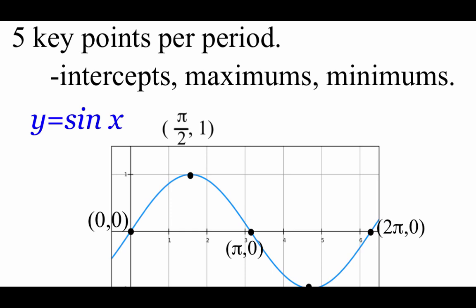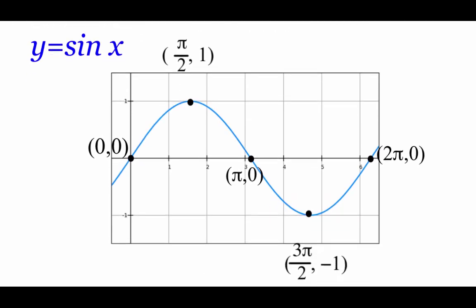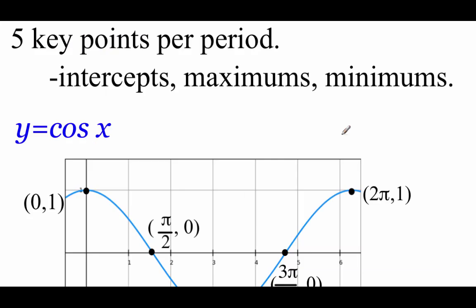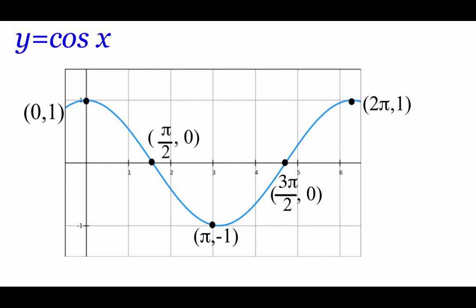As we look at graphing these functions, there are going to be five key points per period: intercepts (both x and y), maximum values, and minimum values. For y equals the sine of x, those key points occur at the quadrant angles: 0, pi over 2, pi, 3 pi over 2, and 2 pi. The same applies when graphing cosine — we still look for intercepts, maximum points, and minimum points at those same quadrant angles.